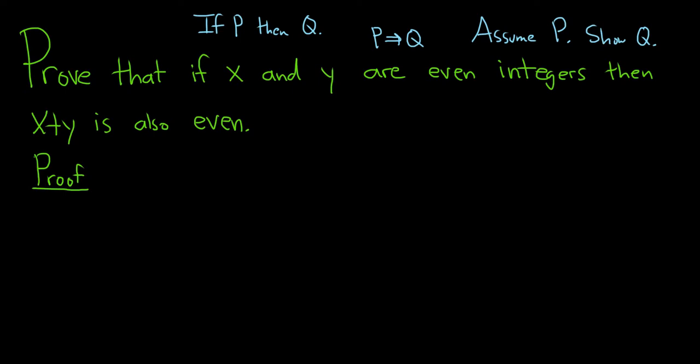So you assume the if part, we assume this part here, and then we have to show whatever is after the word then. So we get to assume this in our proof, and then we have to show this.